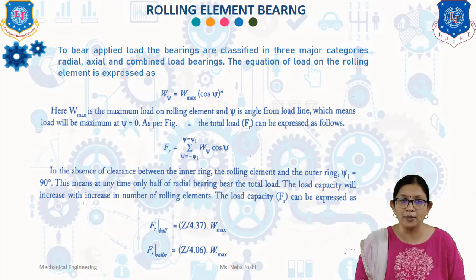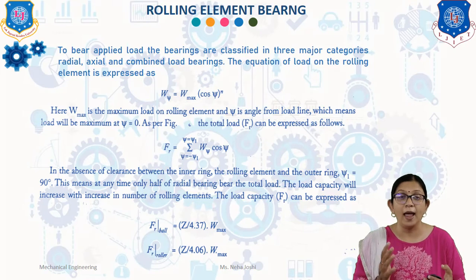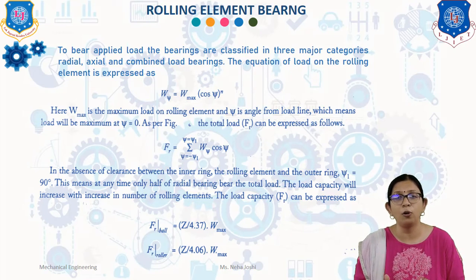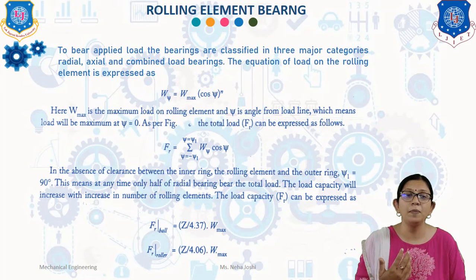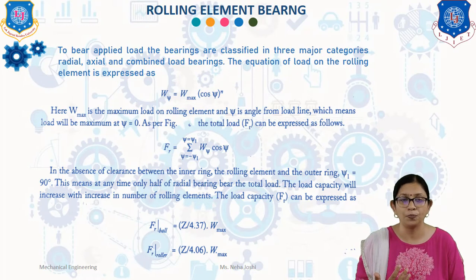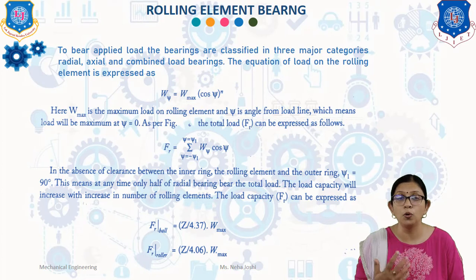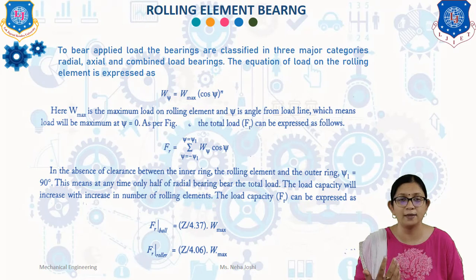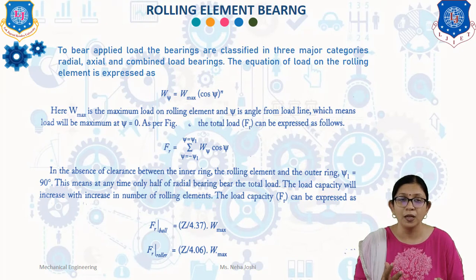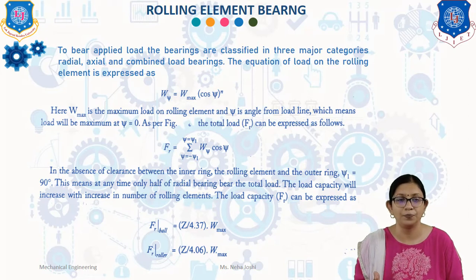Here, W_max is the maximum load on the rolling element and ψ is the angle from the load line, which means load will be maximum at ψ = 0. As per the figure, the total load F_r is expressed using the following equation: F_r = Σ (from ψ = −ψ₁ to ψ = +ψ₁) of W(ψ)·cos(ψ).